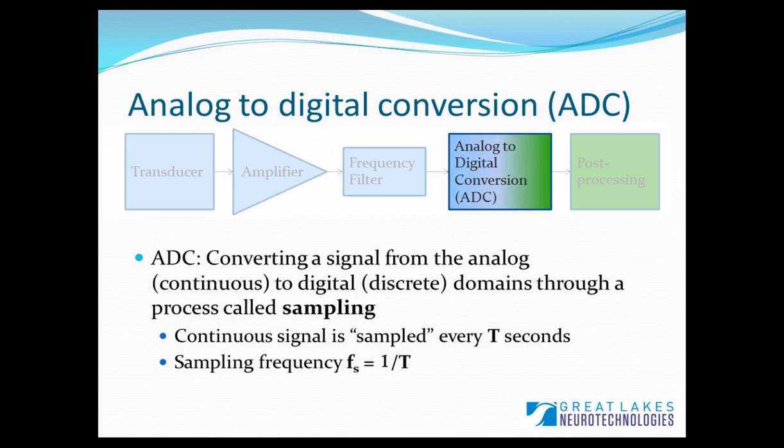In order to analyze a signal on a computer, you have to convert it from an analog or continuous signal into a digital or discrete signal that a computer can store. This process is called sampling, and what happens is that the continuous signal is stored every t seconds. This gives us what is called a sampling frequency, which is the inverse of the sampling interval t.